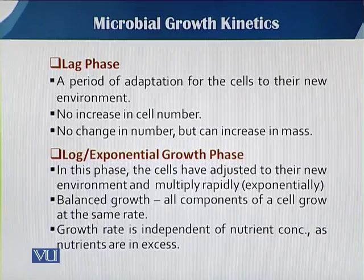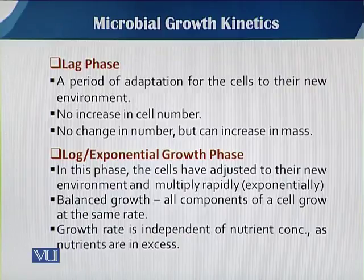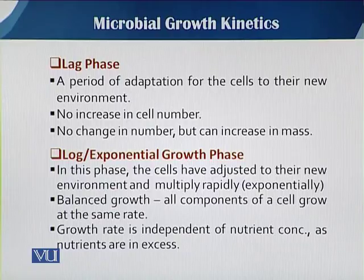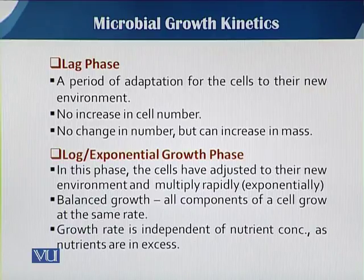As concerned the log phase or exponential phase, in this phase the cells have adjusted to their new environment, because they have already adjusted in the lag phase. When we talk about the cell cycle, there is the need of some cell constituents before division. When there is an M stage, all the cells are ready to go into M stage, and the cell can be divided either mitotically or meiotically. In this phase, the cell has adjusted to its new environment and is ready to multiply exponentially. This can also be called balanced growth, in which all the components of the cell grow at the same time.